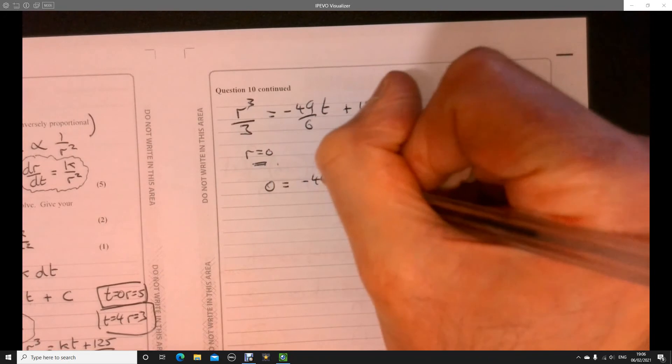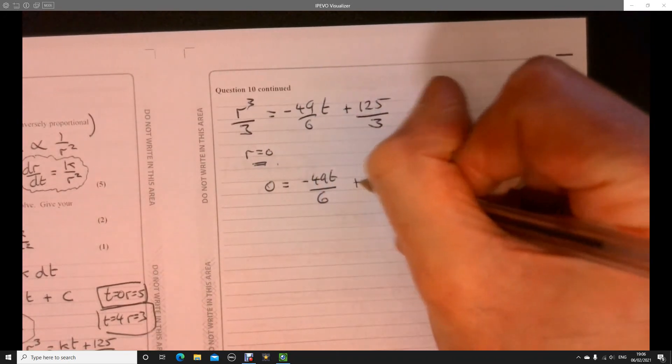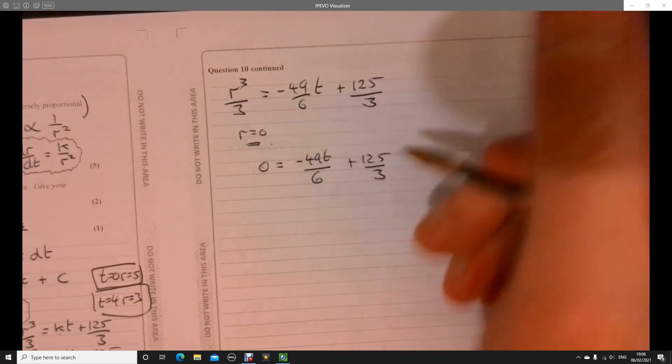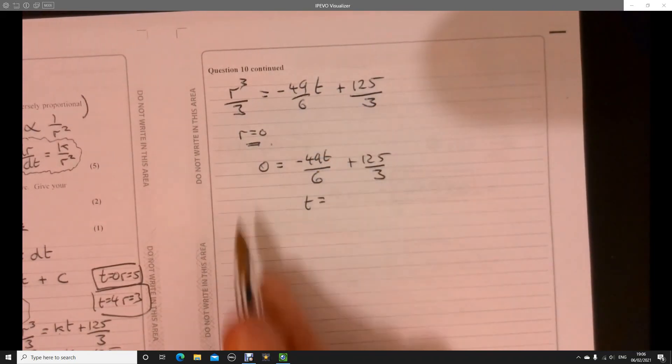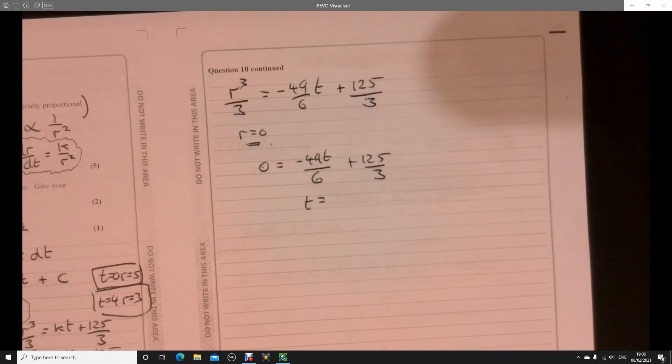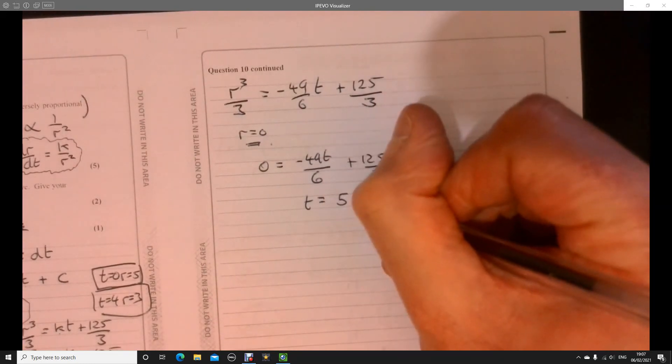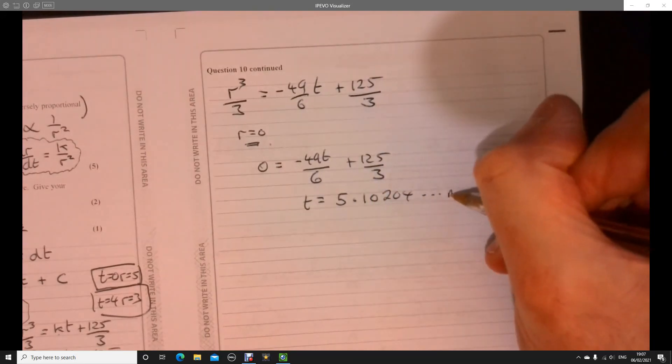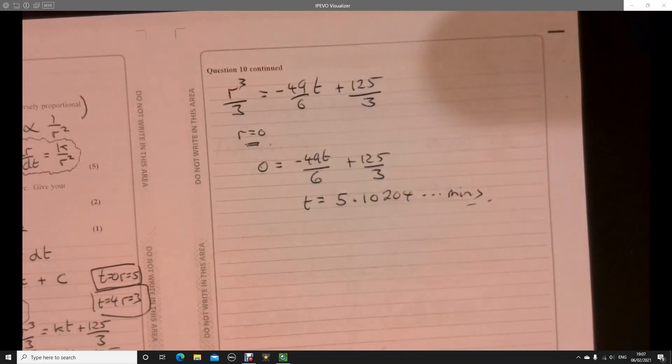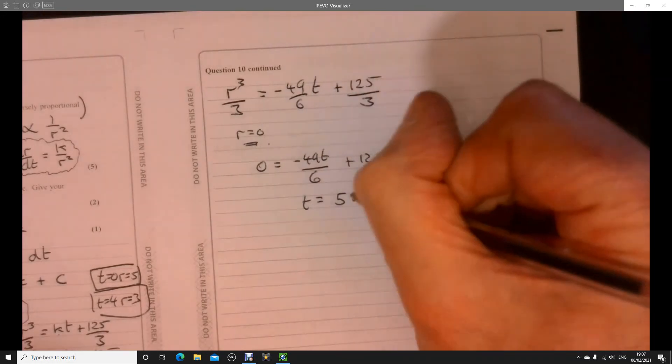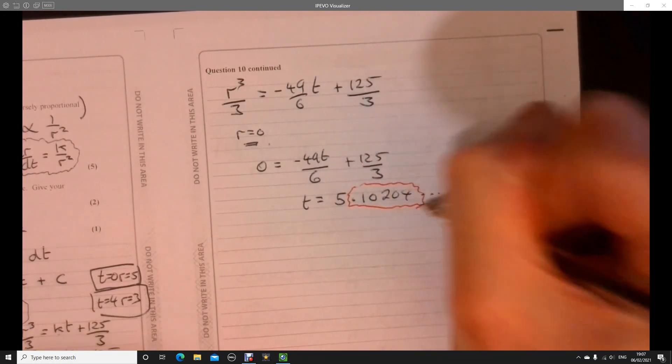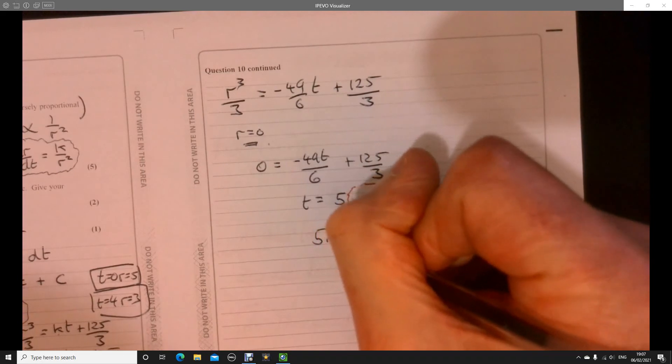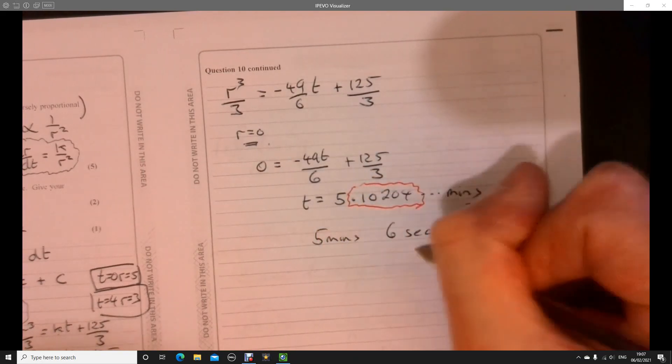So we're just saying when is R equal zero? So let's just fire that in. Here we go. R equals zero minus 49 over 6 T plus 125 over 3. So you should be able to find out that T equals... Take that away from both sides, multiply by 6, divide by minus 49. There we go. And we should find out that we've got 5.10204, that's minutes. However, the question did say minutes and seconds. So easiest way to convert that, we just take that number and just multiply that there by 60. And then we end up with five minutes and six seconds.